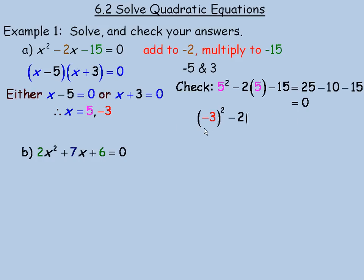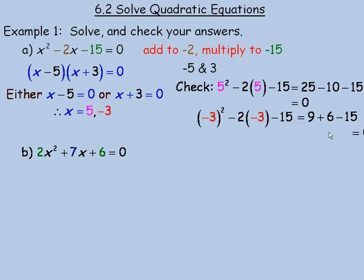Now we check x equals negative 3: we get negative 3 squared minus 2 times negative 3 minus 15. Negative 3 squared is 9, negative 2 times negative 3 is positive 6, then minus 15. Since 9 plus 6 is 15, and 15 minus 15 equals 0, the negative 3 checks as well.